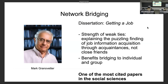Mark Granovetter's paper that we read for this class is one of the most highly cited papers in the social sciences — very influential. He comes up with an interesting observation: you tend to find important and useful information through your acquaintances — people you don't usually interact with very often.